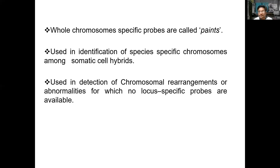To summarize today's lecture: linkage occurs when two genes are very close to each other. If genes are not linked, recombination occurs. More recombination means less linkage; more linkage means less recombination. Equivalently, more linkage means less distance between genes, while more recombination indicates greater distance between genes. Hopefully you understood this topic and enjoyed the lecture.